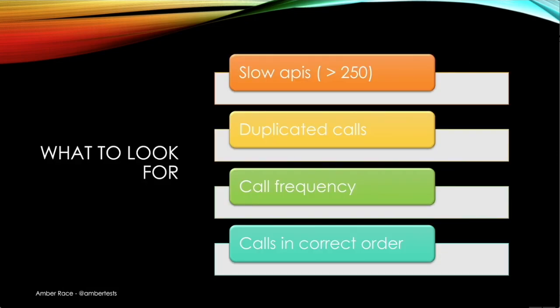When looking at APIs, you want to look for APIs that are slow — more than 250 milliseconds. You want to make sure there are no duplicated calls. These are very easy wins: if you are making redundant calls, you take them out and everything is better. Call frequency is important, and also whether the calls are in the correct order. These are things you can look at right away to get quick wins on both client performance and server load.